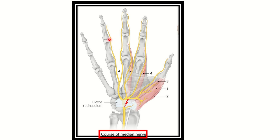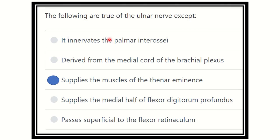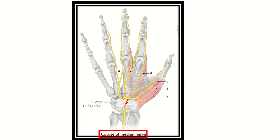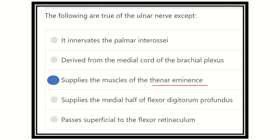Our final answer is ready. The option 'supplies muscles of the thenar eminence' is not true, because as we saw in the previous picture, this is the thenar eminence and it is supplied by the median nerve, not the ulnar nerve.